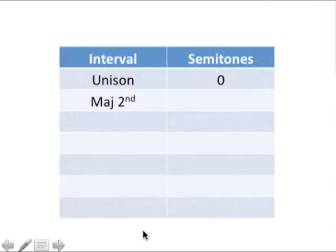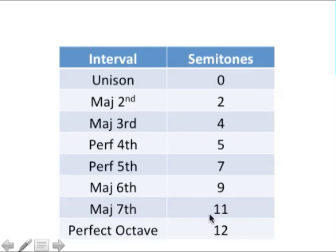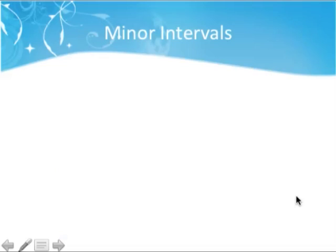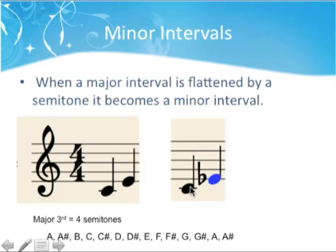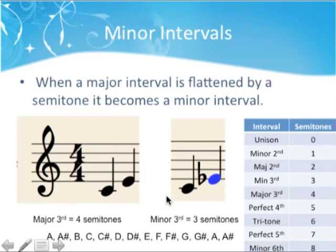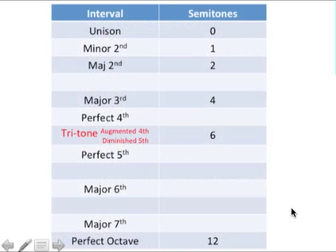From our last lesson you should have copied down the interval chart. If you don't have it, copy it down now — pause the video. Now we're going to move on to the nitty-gritty of today's lesson: minor intervals, diminished intervals and augmented intervals. Here we've got C to E-flat, which is only three semitones, so it's a minor third. When a major interval is flattened by a semitone it becomes a minor interval.